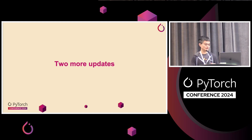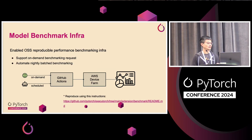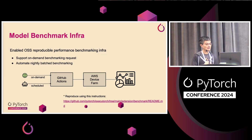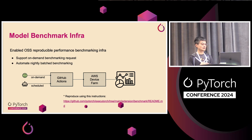Two more updates on ExecuTorch. First is the model benchmark infra — we enable OSS reproducible performance benchmarking, either with on-demand benchmarking requests or scheduled benchmarking to monitor performance regressions. You can submit requests through GitHub Actions, and the benchmark runs on AWS Device Farm to generate the performance matrix.